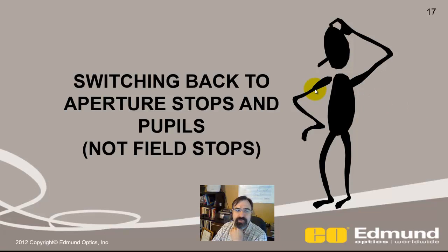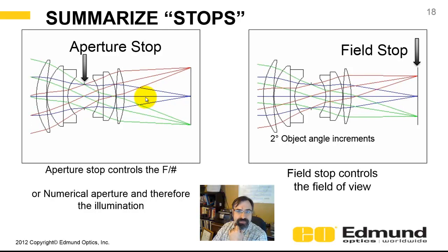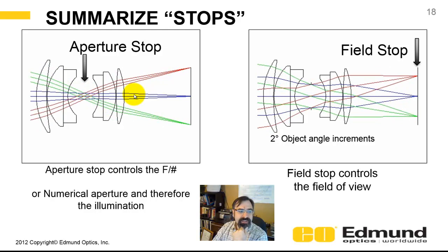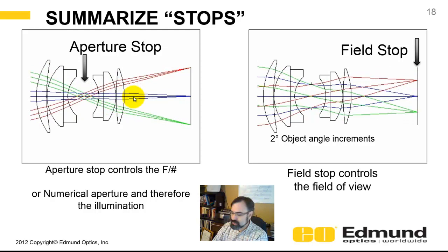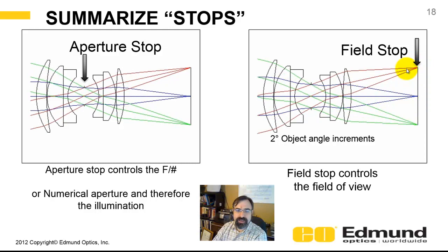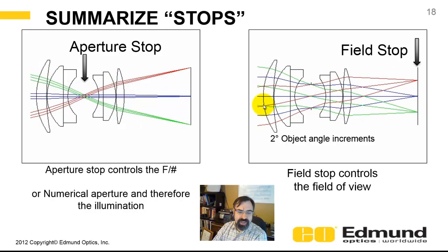Now I'm going to switch back to aperture stops and pupils. There are graphics showing the difference between an aperture stop and a field stop. On the left, we're changing the iris — the iris is growing and increasing — and you can see the F-cone or numerical aperture is varying. That controls your aberration balancing and how much light gets to your image plane. As opposed to the field stop on the detector going in and out — you can see the field of view increasing and decreasing. If you look at the chief ray, it's going to be changing angle. That's the distinction between an aperture and a field stop.